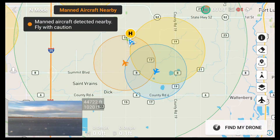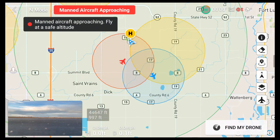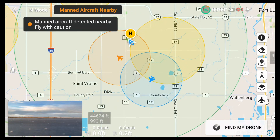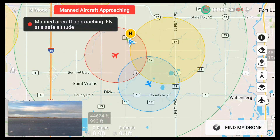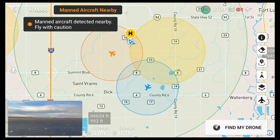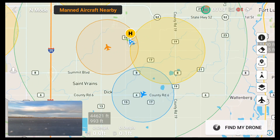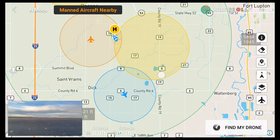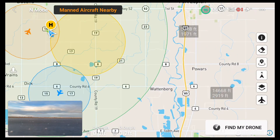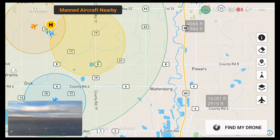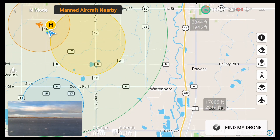It automatically zooms in. In order to get the elevation of the airplane and how far the airplane is away from me, I have to actually zoom out on the screen. If you look over on the far right, you'll see one little gray box — the top number is how many feet he is away from me and the bottom number is his elevation above ground.